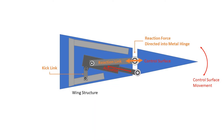The kick link, or short link, allows the actuator to rotate and minimizes the forces reacted into the wing structure. This design allows for an 80% reduction in the force reacted into the wing structure.